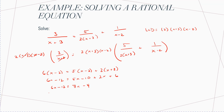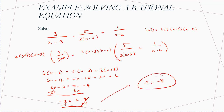Subtract 6X from each side: minus 12 equals X minus 4. Add 4 to each side: X equals minus 8. This is fine because the only two values you can't plug in are 2 — which would cause a divide by 0 — and minus 3. The key is finding the LCD and then multiplying everything by the LCD. It'll cancel out and you'll be left with a very simple linear equation to solve.